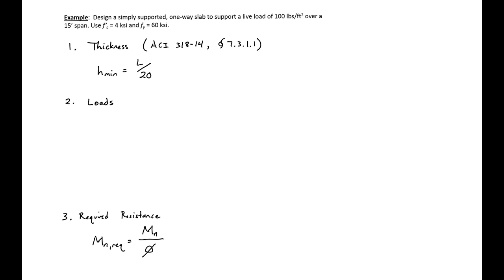In this example, we will be designing a one-way slab to support a live load of 100 pounds per square foot over a 15-foot span. We're going to be using a 4 KSI concrete, which we decided on in the preliminary design steps, and we're going to be using a 60 KSI steel.